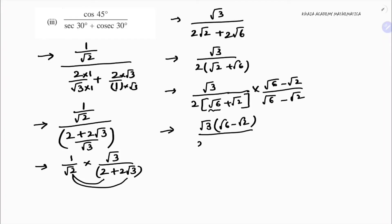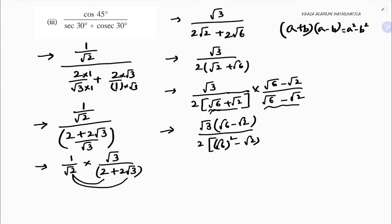Numerator: √3 × (√6 − √2) = √18 − √6. Denominator: using (a+b)(a−b) = a²−b², we get (√6)² − (√2)² = 6 − 2 = 4. Multiplied by 2 gives 8. So we have (√18 − √6) / 8.